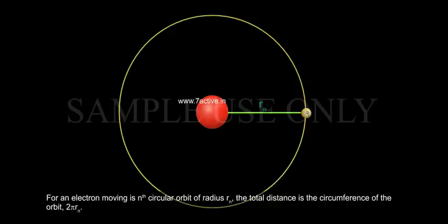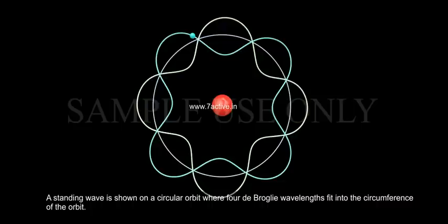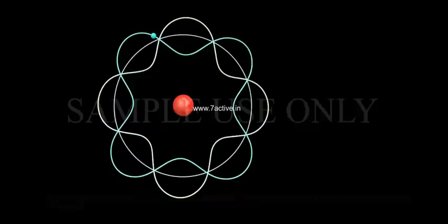For an electron moving in the nth circular orbit of radius rn, the total distance is the circumference of the orbit, 2π rn. A standing wave is shown on a circular orbit where four de Broglie wavelengths fit into the circumference of the orbit.